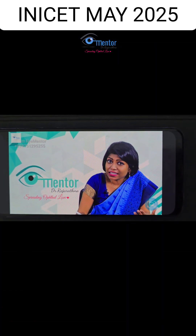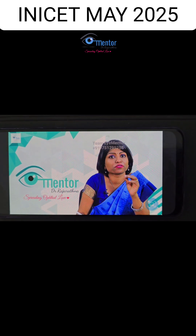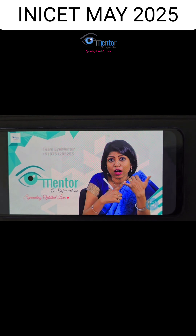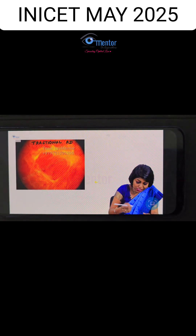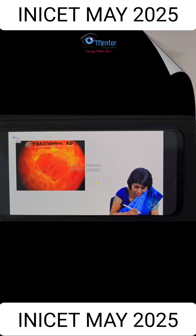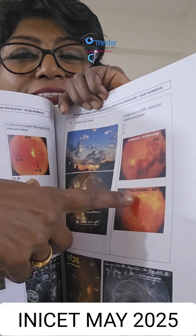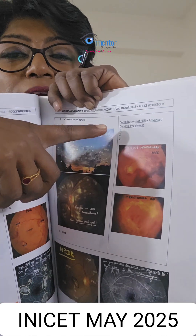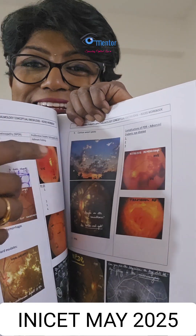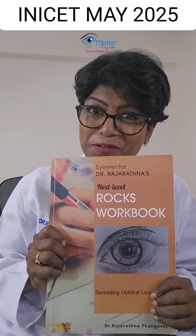We are discussing advanced diabetic eye disease — the complications of proliferative diabetic retinopathy. We already saw how vitreous hemorrhage looks. The second component is tractional retinal detachment. There is an image showing tractional retinal detachment, and this is taken directly from the workbook.